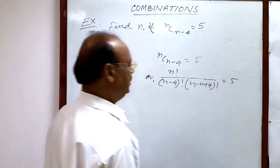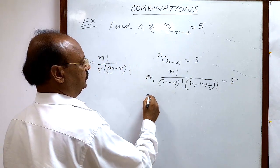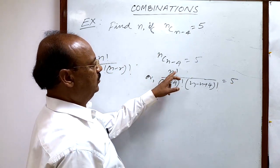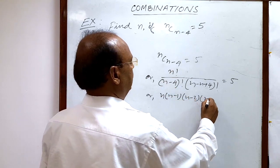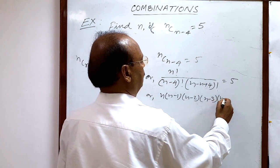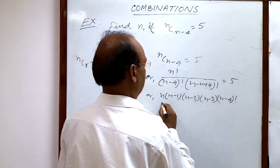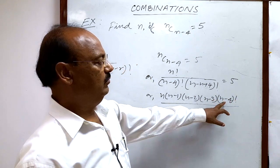This n factorial can be written as n × (n-1) × (n-2) × (n-3) × (n-4) factorial. This is a continued multiplication from 1 to n-4, and again the multiples are here up to n.